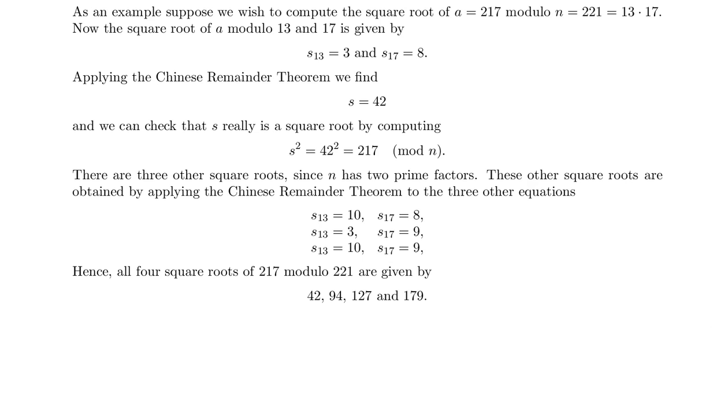Hence, all four square roots of 217 modulo 221 are given by 42, 94, 127, and 179.